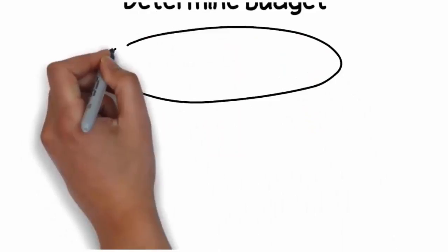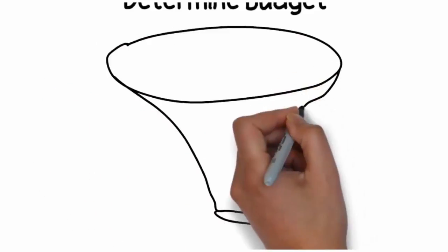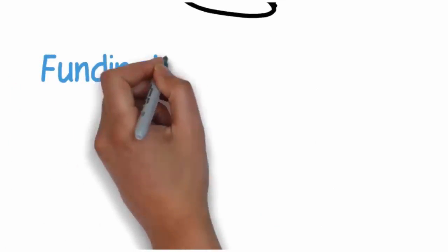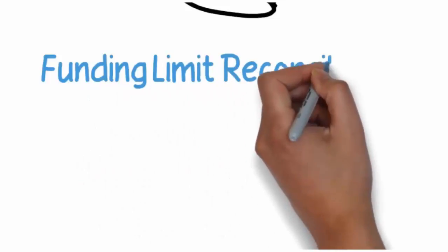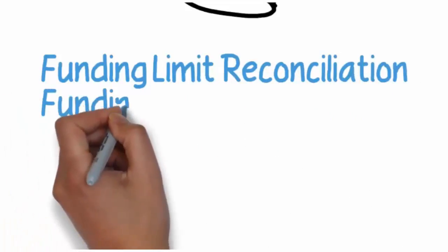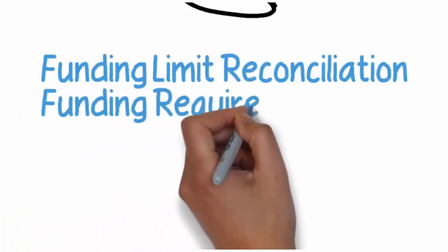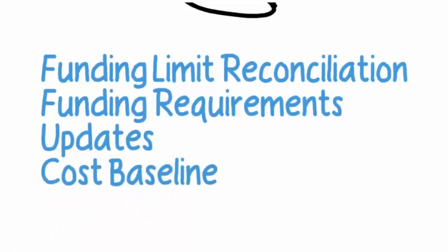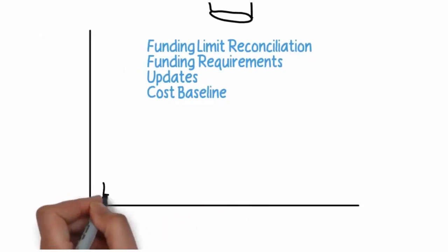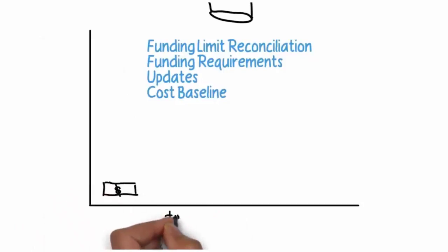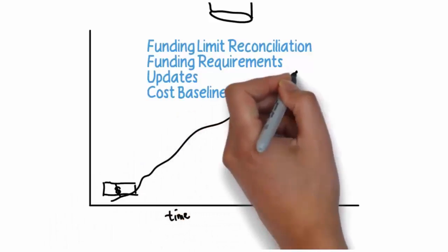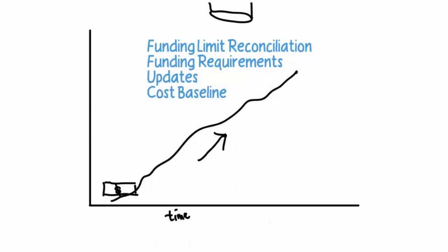From there, we take those estimates and determine a budget, which is essentially an aggregation or update of those estimates. The outputs from that process are going to be a funding limit reconciliation and other funding requirements we may need. Of course, there's also a cost baseline — how we're going to use that money over the course of time — using both our costs and what we've got from time management, based on what work we think is going to be used and how it will be spent over that time.